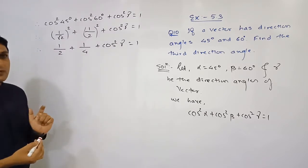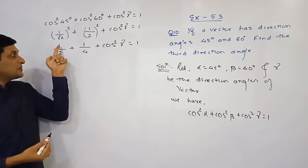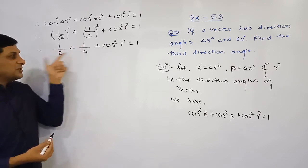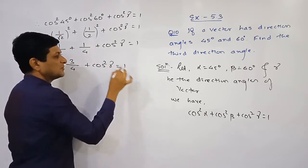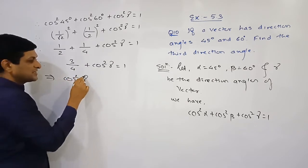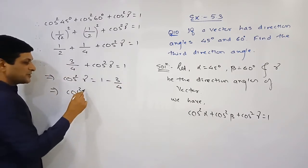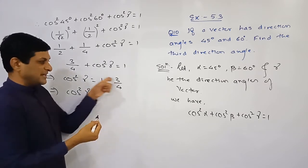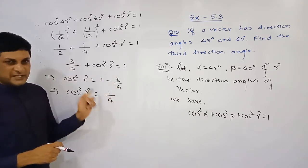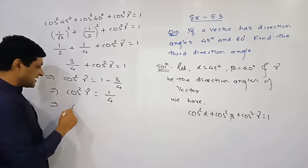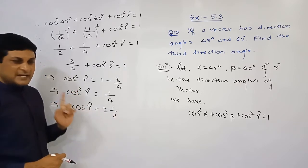Adding 1/2 and 1/4 — multiplying numerator and denominator to get a common denominator — we get 2/4 + 1/4 = 3/4. So: 3/4 + cos²γ = 1, which implies cos²γ = 1 − 3/4 = 1/4. Taking the square root of both sides, cos γ = ±1/2.